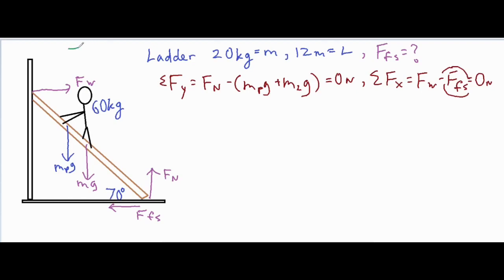Now let's look at the torques acting on the ladder. We take all the forces that are perpendicular to the pivot point and multiply by the lever arm r. Our pivot point is right at the base of the ladder — that's the point around which the ladder is trying to pivot. We have three things providing torque. First, from the ladder itself: that's mg_l, acting at six meters from the pivot point, because the ladder is 12 meters long and its center of mass is at the midpoint.